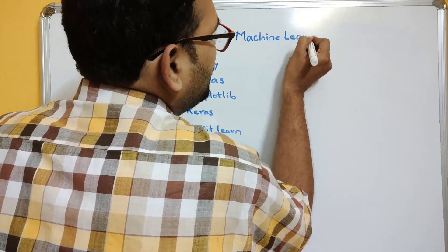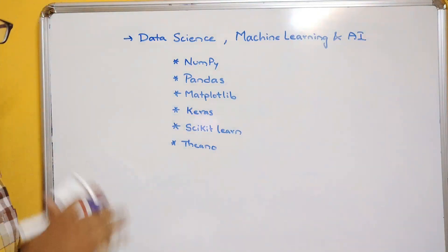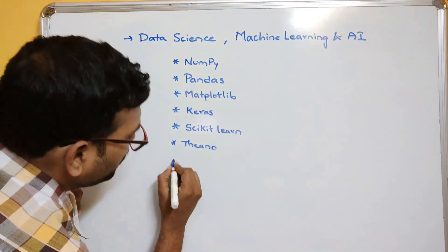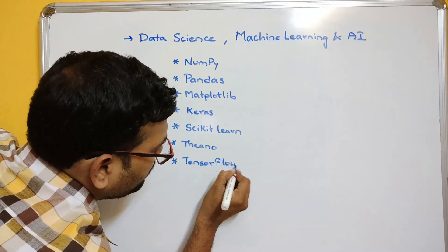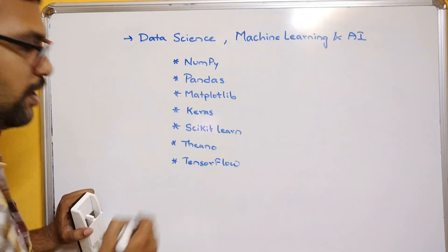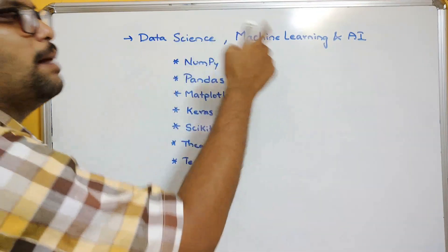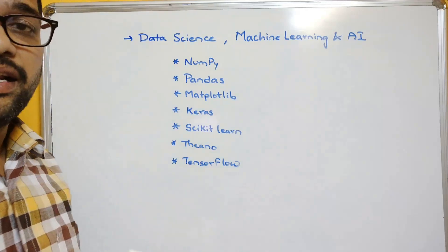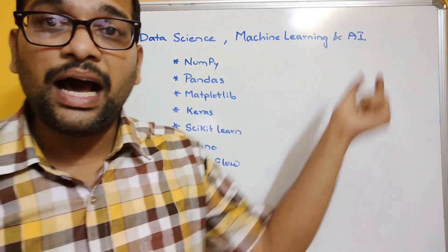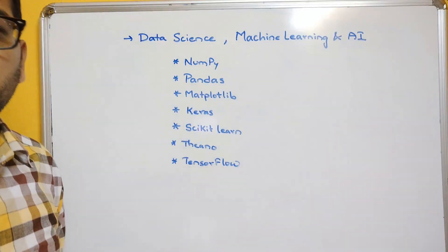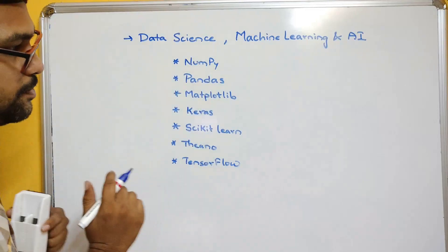Similarly for machine learning and artificial intelligence, the major library is TensorFlow. These libraries are used to develop machine learning applications and implement artificial intelligence algorithms.